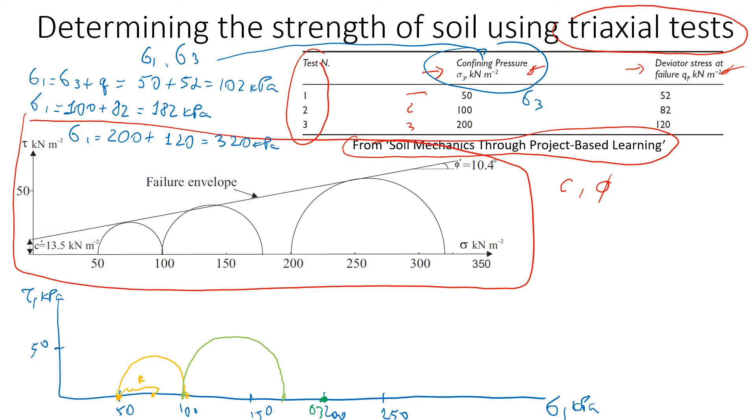This is going to be a really big circle like this. The next step is to draw a failure envelope or failure line.